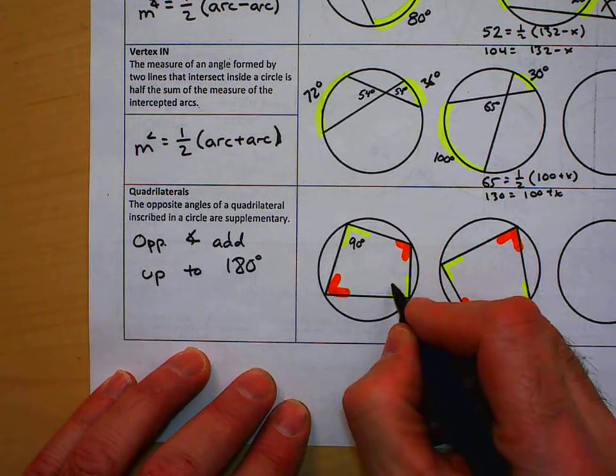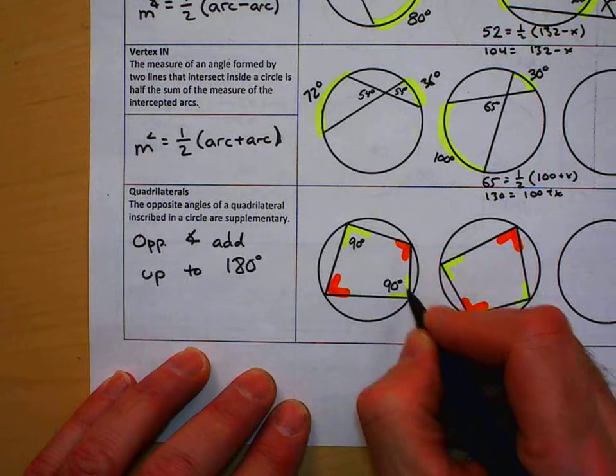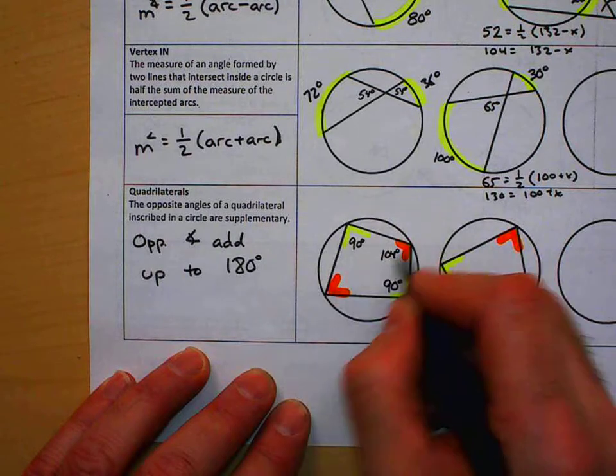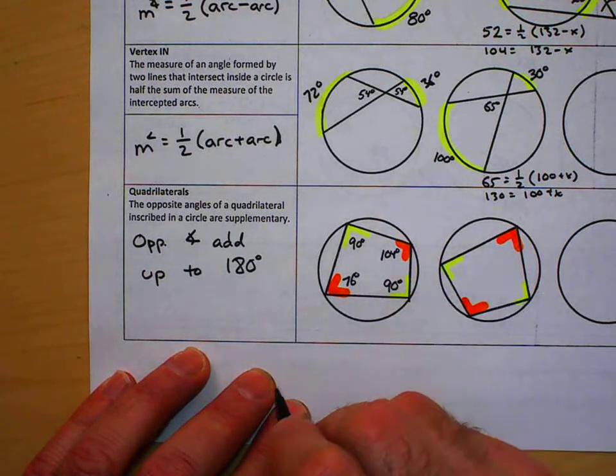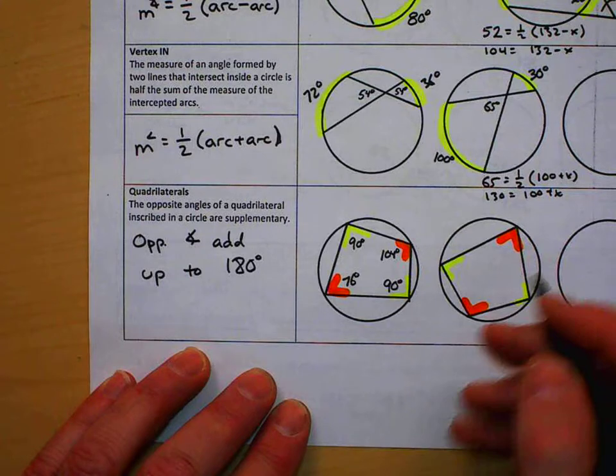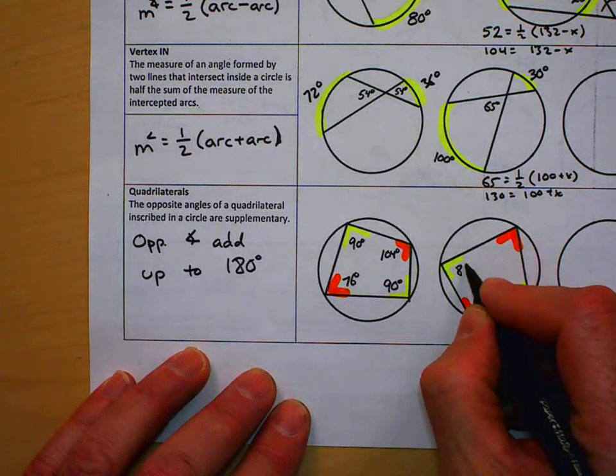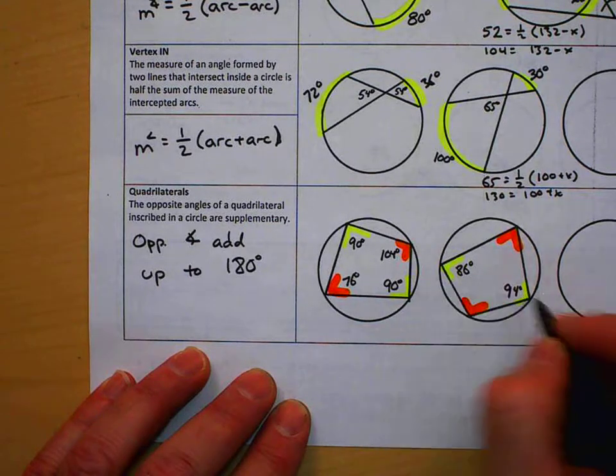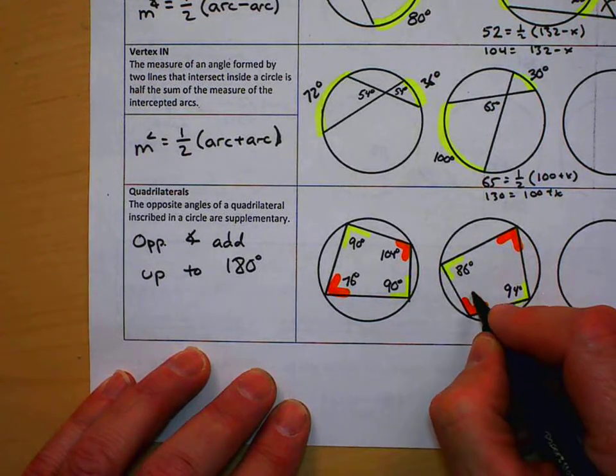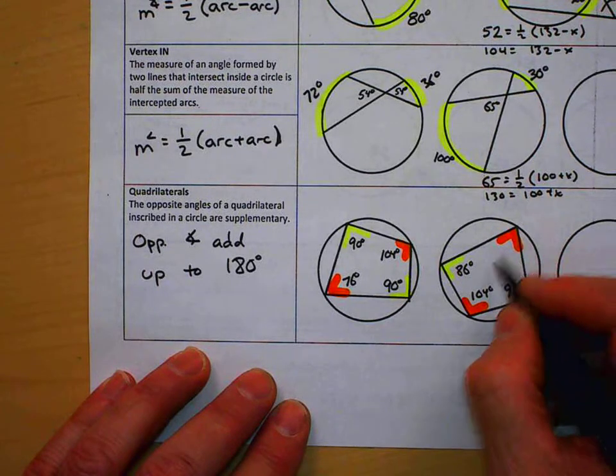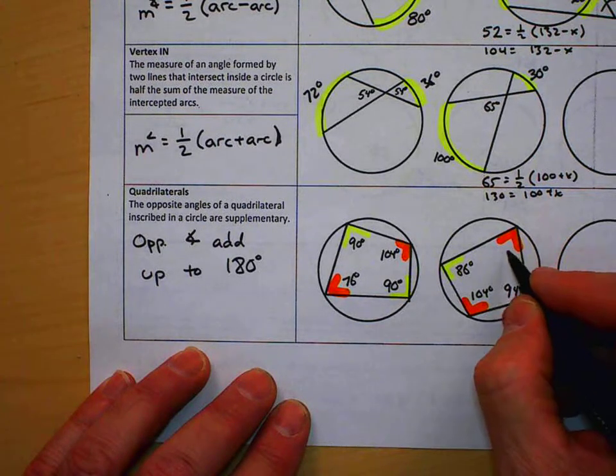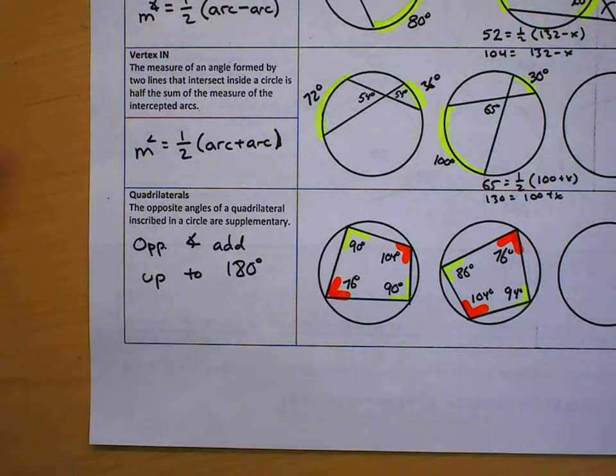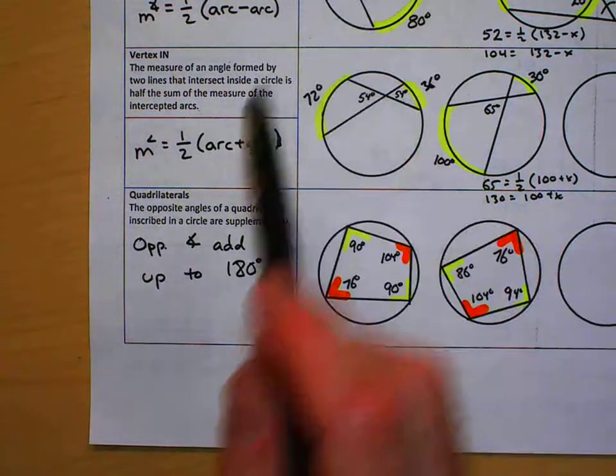So if they told me this was 90, the supplement to that is 90. These two now add up to 180. If they told me this was 104, these two add up to 180—that makes this 76. Here we also have, if this was 86, take that away from 180, we get 94—this is 94 degrees. Those are supplements to each other. And last, this is 104 degrees. The opposite one would have to make the supplement add up to 180, so that makes this 76 degrees.